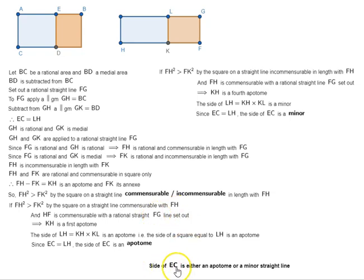We have shown that side of EC is either an apotome or a minor straight line. That is proposition number 108 of book 10 of Euclid's Elements.